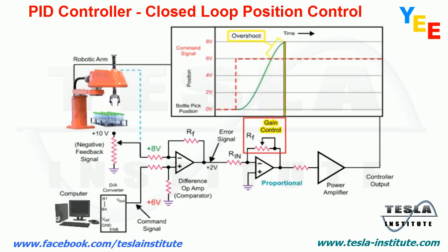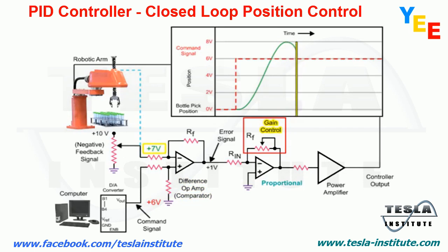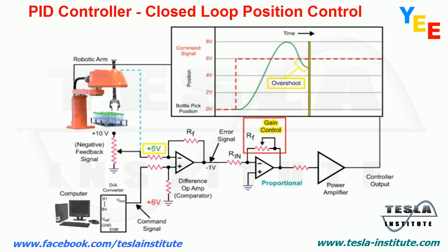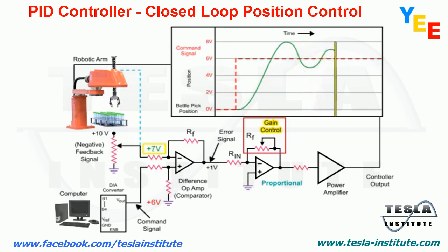When this occurs, the feedback signal is greater than the command signal. The op-amp reacts to this condition by changing the polarity from positive to negative, which results in reverse rotation of the arm motor to go back to the desired position. Although with high gain, the overshoot is repeated again in the opposite direction, and the overshoot of the target position repeats until the robotic arm motor stabilizes.